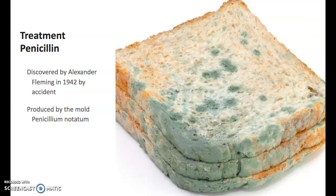There's a really cool story about how Alexander Fleming found penicillin by accident. He noticed some mold growing in a bacteria culture, and around the mold there was a zone of inhibition where no bacteria were growing. He reasoned that maybe this mold produces something that kills the bacteria.